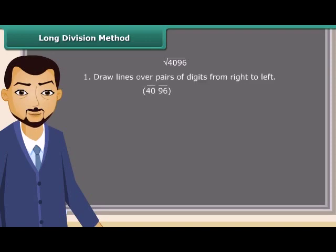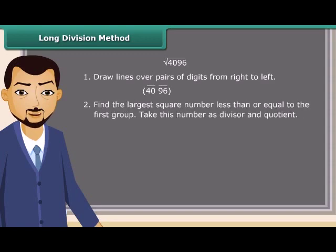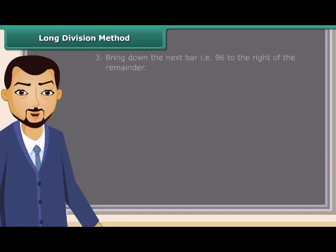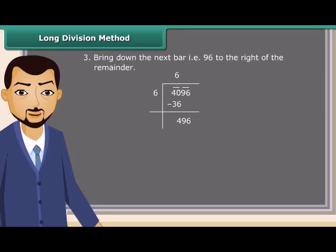First of all, draw lines over pairs of digits from right to left. Next, find the largest square number less than or equal to the first group. That is 40. Since 36 is less than 40, so we take 6 as the divisor and 6 as the quotient. Now subtract 36 from 40. After that, bring down the next bar, that is 96 to the right of the remainder.